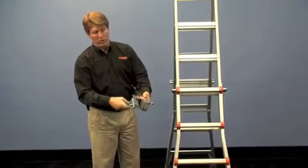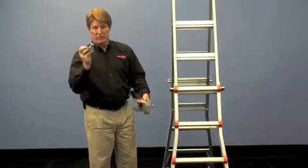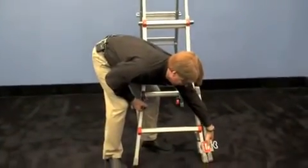Simply unscrew that wing bolt and take out this clamp piece and then put your leg leveler right here at the bottom of your ladder.